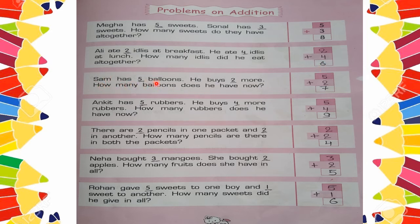Next: Sam has 5 balloons and he buys 2 more. How many balloons does he have now? Sam has 5 balloons, then 2 more. Write 5, then write 2. 5 plus 2: counting 6, 7. So 5 plus 2 is equal to 7.